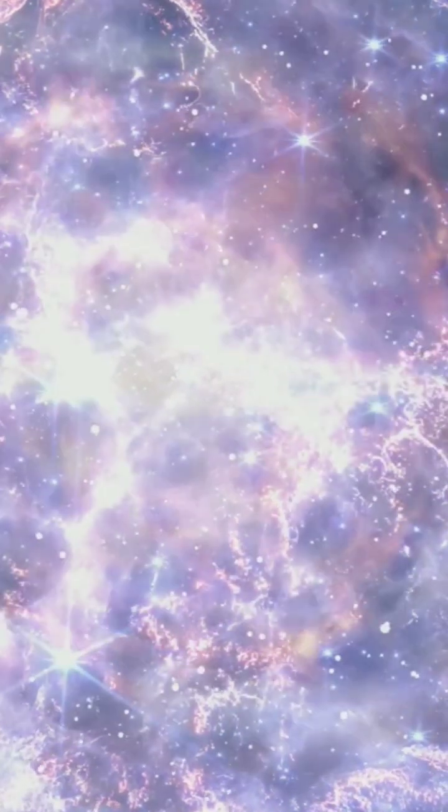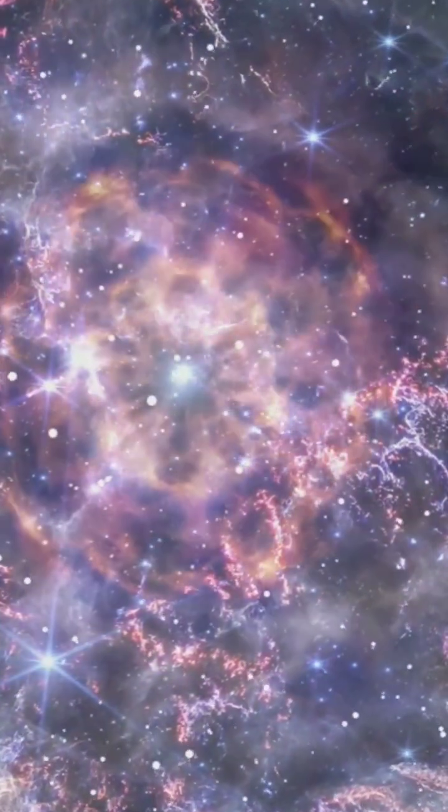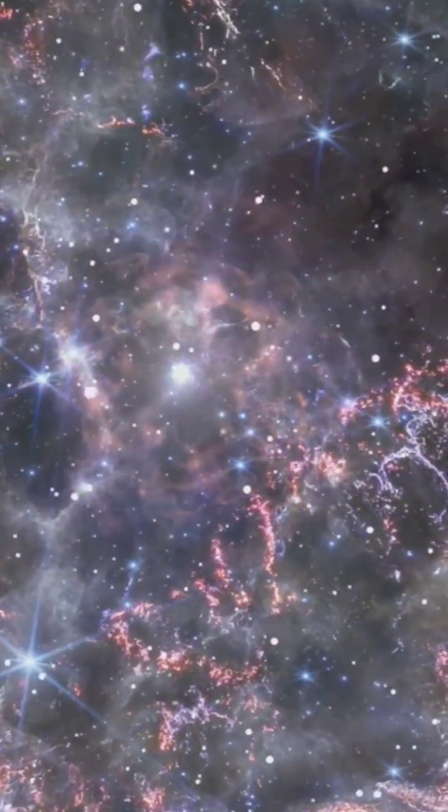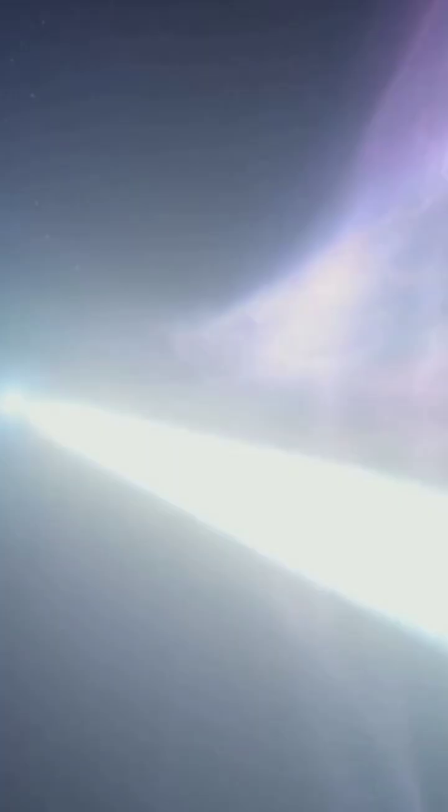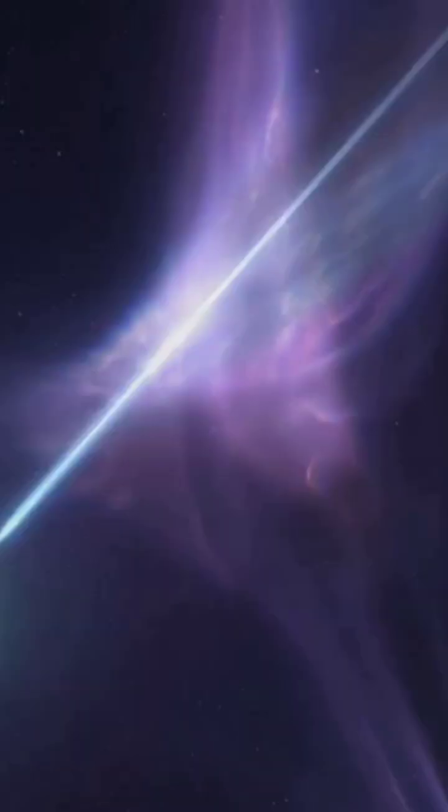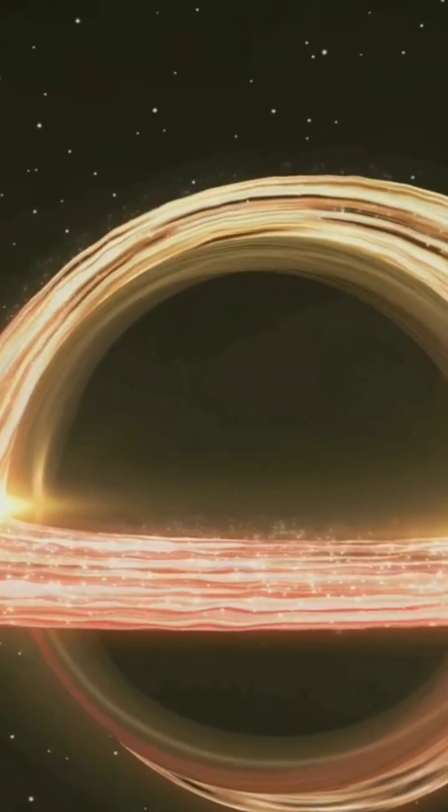Neutron stars are the leftover hearts of massive stars that exploded in supernovas. Think of them as the densest, tiniest cosmic pancakes in the universe. Squeeze the mass of our sun into a ball just 20 kilometers across, and you get a neutron star packed so tightly with neutrons, it's like an atomic traffic jam.